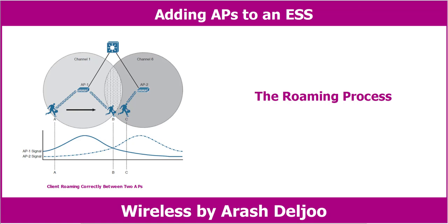This ensures that a client will be able to receive signals from a nearby AP without interference from other APs. In the 5 GHz band, we have much more flexibility because it has many more non-overlapping channels available. In fact, all channels are spaced such that they will not overlap with each other.